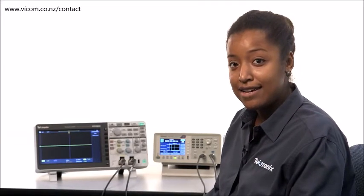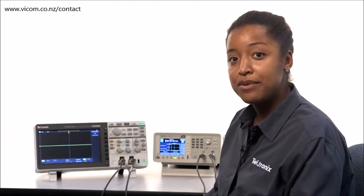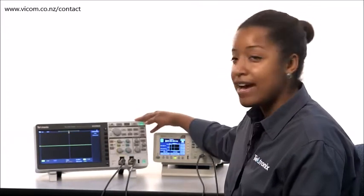In this XYZ series video, we'll be learning how to look at and analyze electronic signals. To do this, we'll be using a Tektronix TBS 2102 oscilloscope, as well as an AFG.